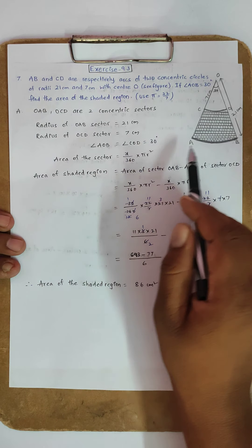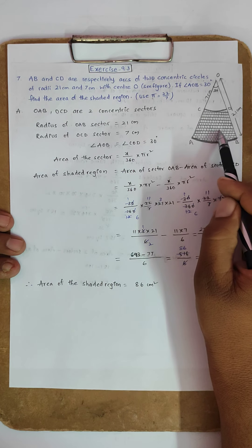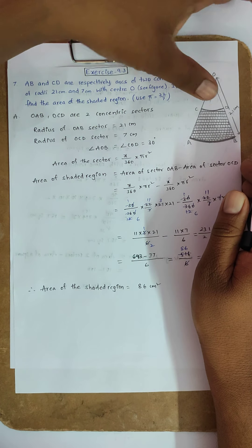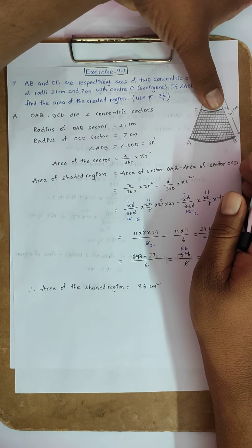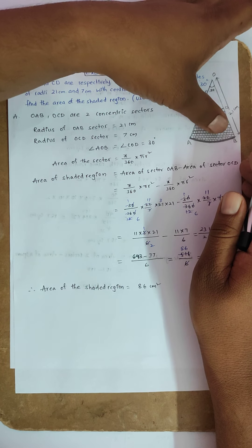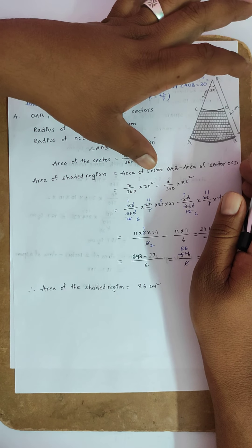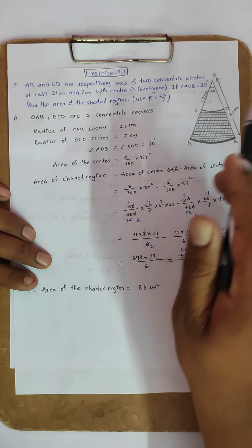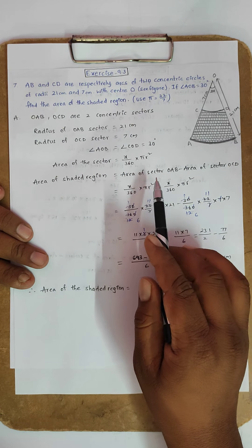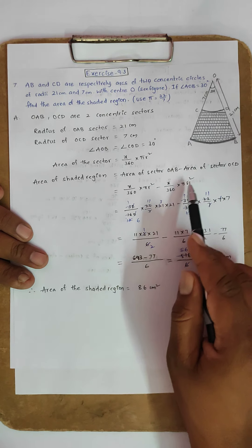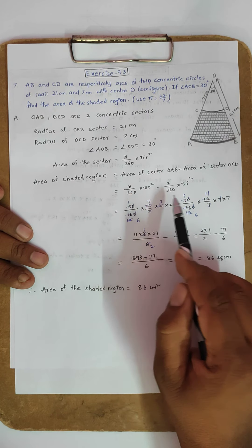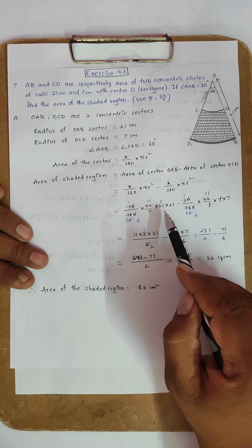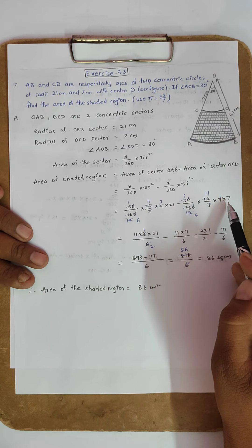Area of the shaded region equals area of the big sector minus area of the small sector. Applying the formula: (30/360) × (22/7) × 21² minus (30/360) × (22/7) × 7². The big sector uses radius 21 cm and the small sector uses radius 7 cm.